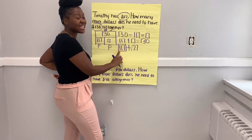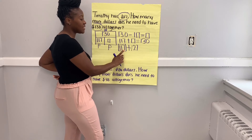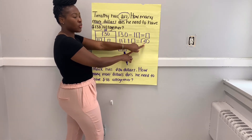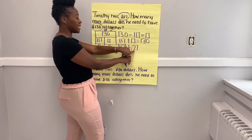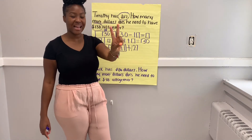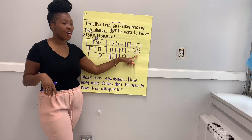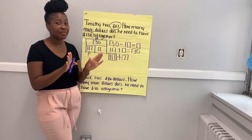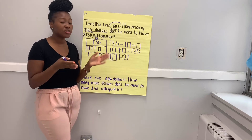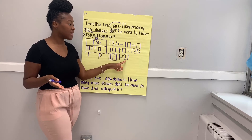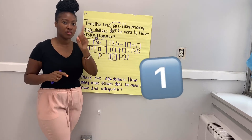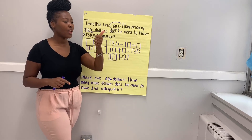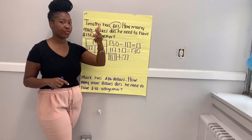We know that we have 117, and Ms. Coombs already started counting on by tens. So 117, 127 — and I cannot count on by tens anymore because I'm only counting on to 130. So I'm going to start counting on by ones now. So 127, 128, 129, 130. I started at my known part and counted on until I reached my whole. I counted on one ten, then switched to counting by ones because I needed to get to 130, and I counted on three ones.